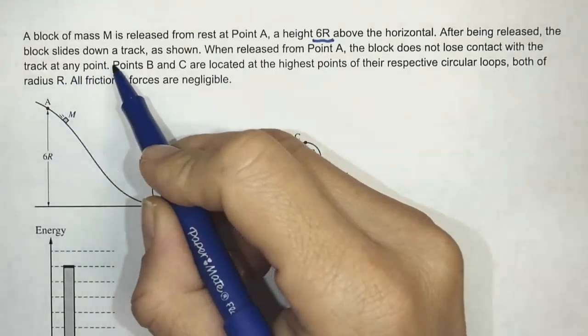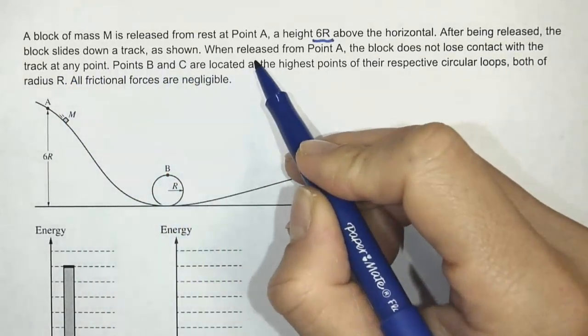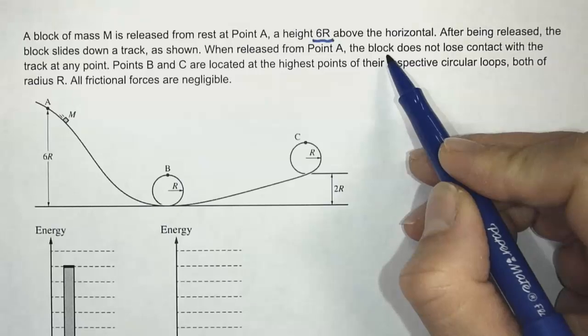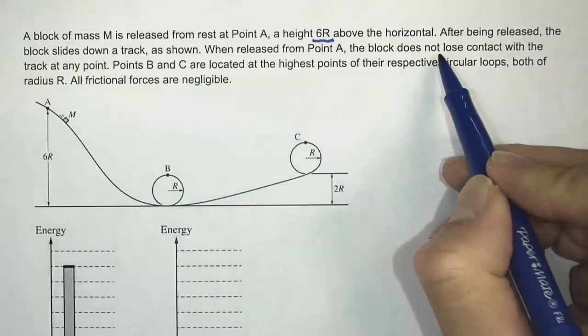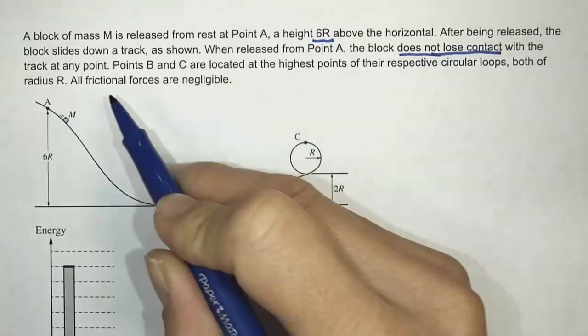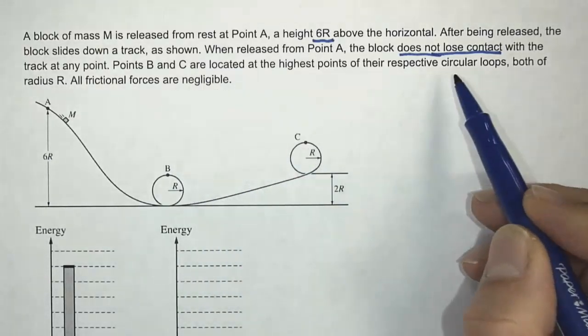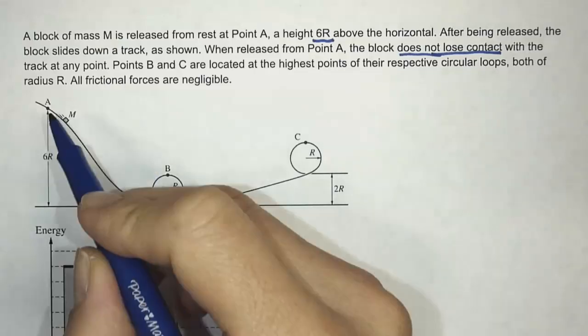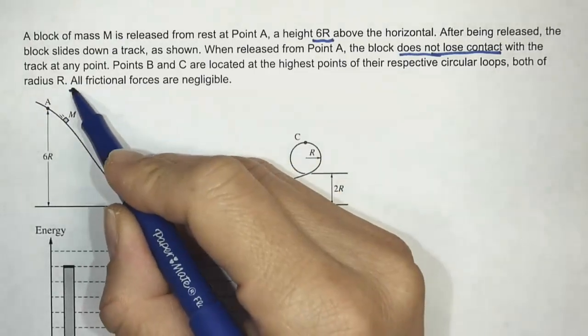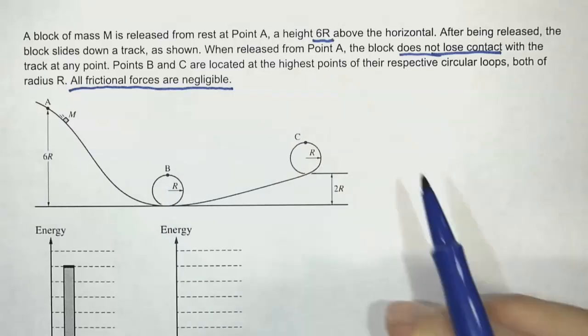After being released, the block slides down a track as shown. When released from point A, the block does not lose contact with the track at any point. Points B and C are located at the highest points of their respective circular loops, both of radius R. All frictional forces are negligible, so we can ignore friction.